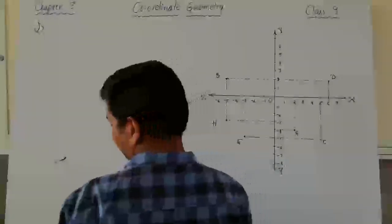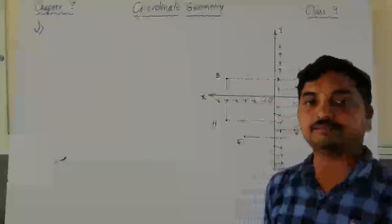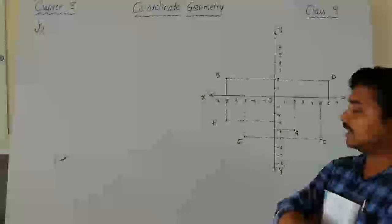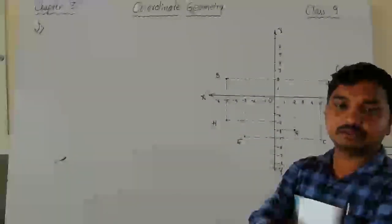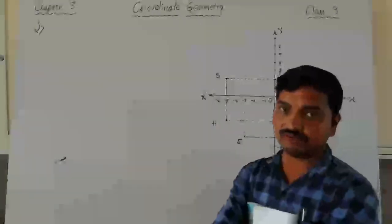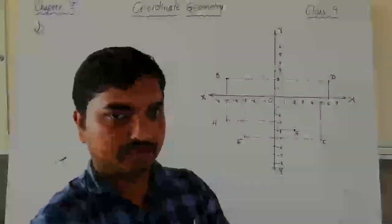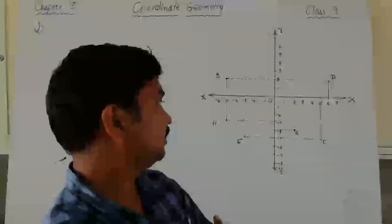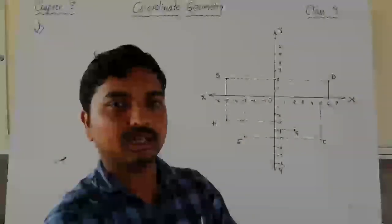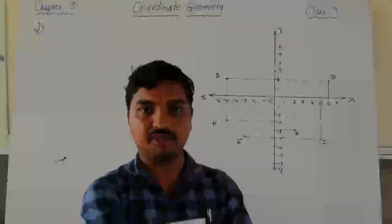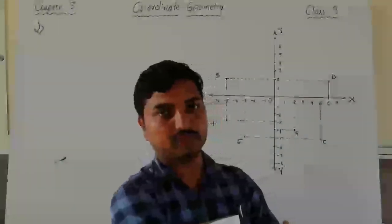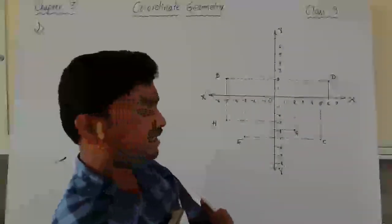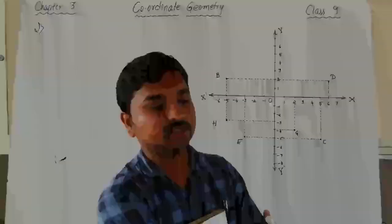Now for question 2, remember: you have to write the diagram in the graph sheet only — do not write it in your notebook. Write it in the graph sheet, then cut out the figure and paste it below the question. This way the dotted lines from the graph sheet grid will be clearly understood. Take the scale as 1 centimeter equal to 1 unit, then plot the x-axis and y-axis, write the digits, mark the points, and draw the dotted lines.